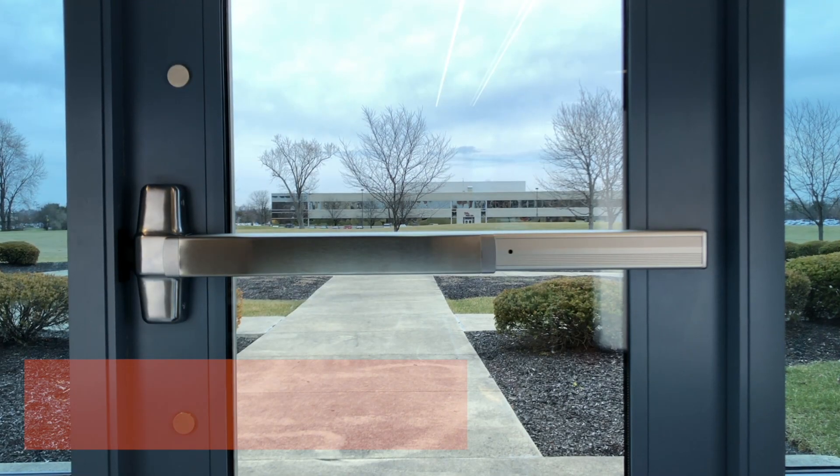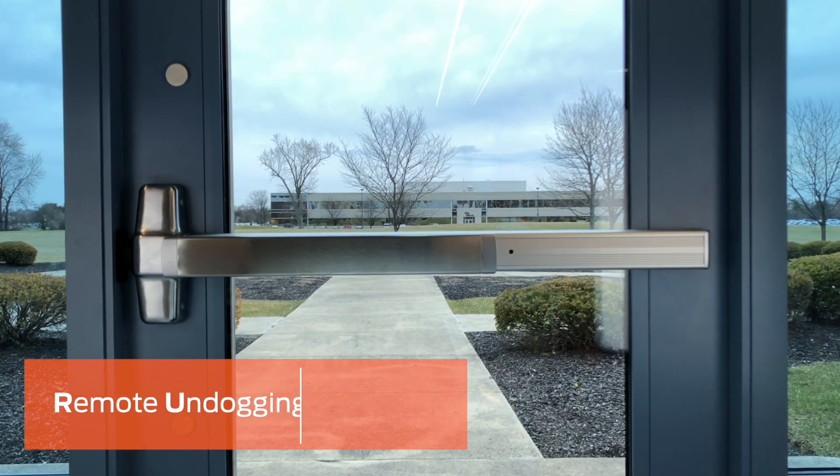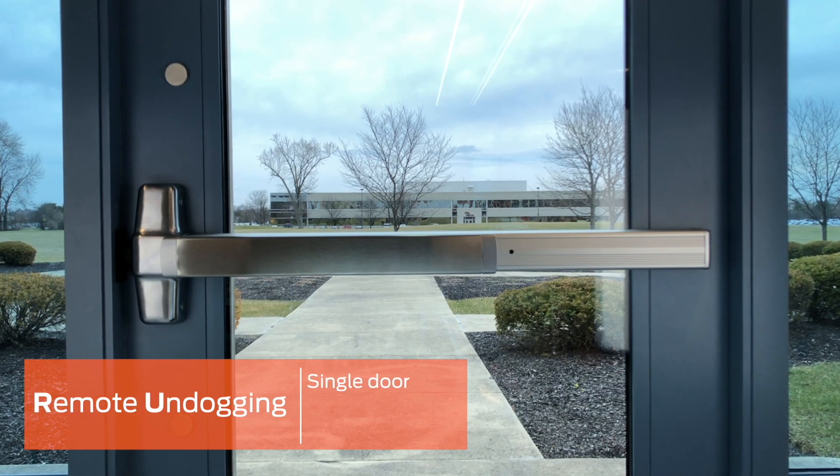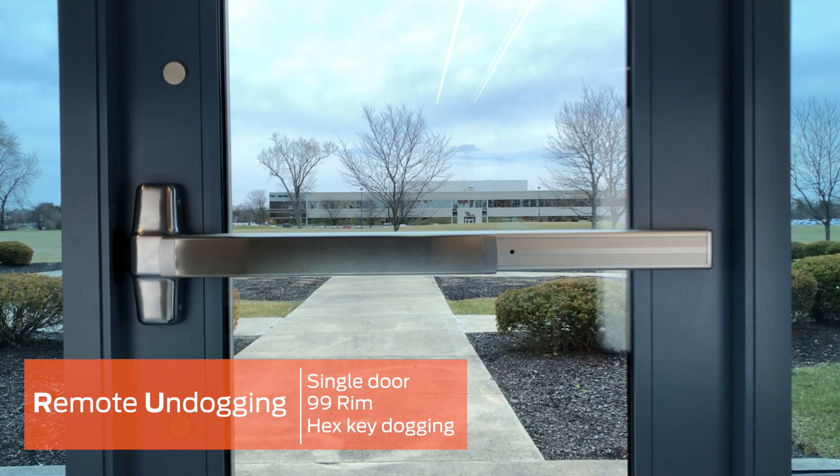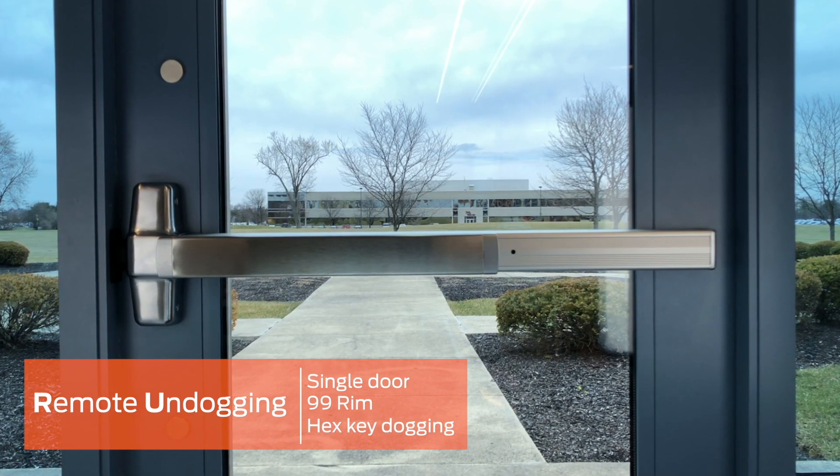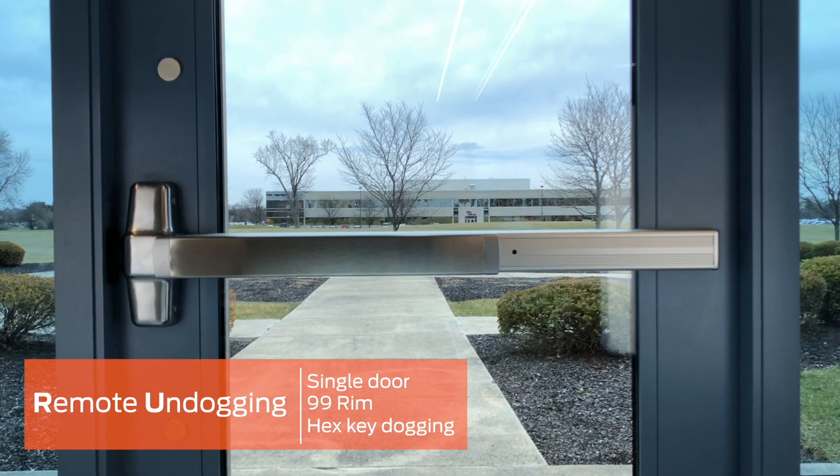We will be installing a remote undogging or RU kit on a single door opening with a 99 rim exit device with hex key dogging. The steps to install the remote monitoring or RM kit are also included in this video.